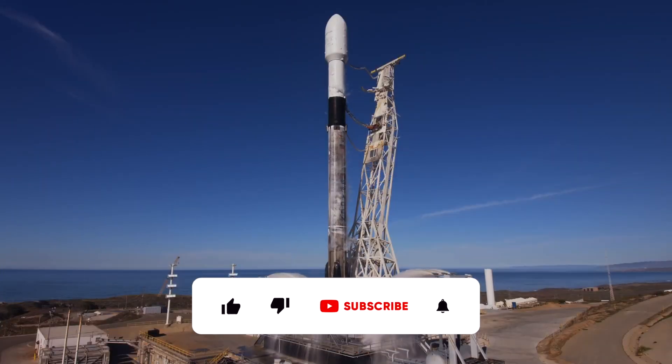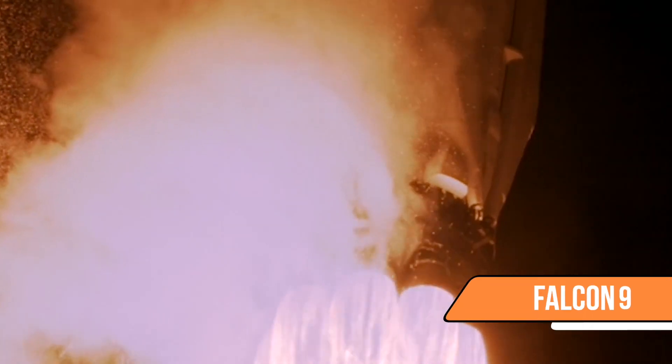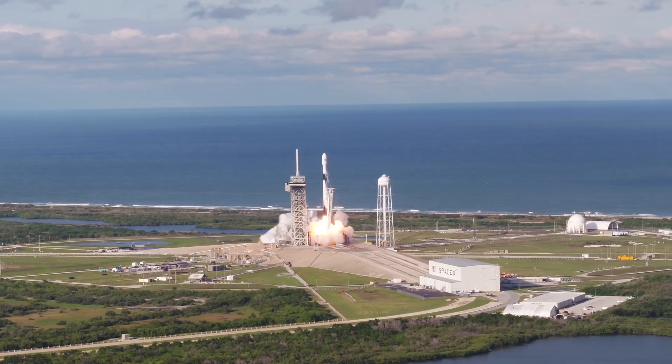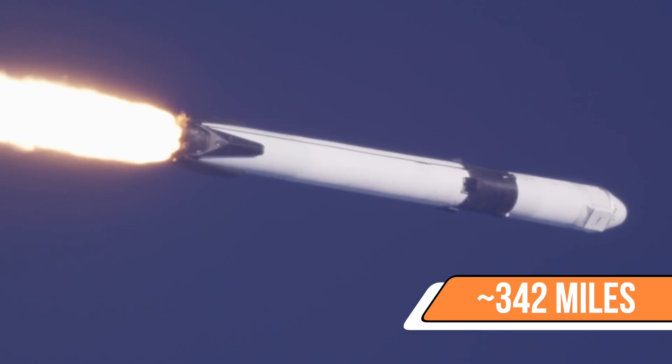Over one year later, in May 2019, SpaceX launched the first 60 Starlink satellites onboard their own rocket, the Falcon 9. These satellites are now flying around 550 kilometers above our planet's surface.